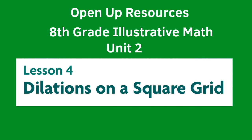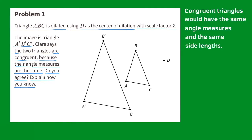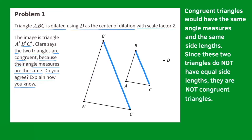Open Up Resources, 8th Grade Illustrative Math, Unit 2, Lesson 4: Dilations on a Square Grid. Problem number 1. Triangle ABC is dilated using D as the center of dilation with scale factor 2. The image is triangle A prime, B prime, C prime. Claire says the two triangles are congruent because their angle measures are the same. Do you agree? Congruent triangles would have the same angle measures AND the same side lengths. Since these two triangles do not have equal side lengths, they are not congruent triangles.